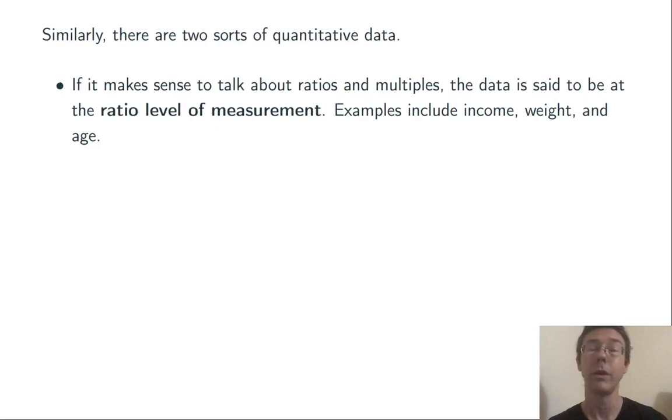Similarly, there are two kinds of quantitative data. If it makes sense to talk about ratios and multiples, the data is said to be at the ratio level of measurement. Examples include income, weight, and age. It makes sense to say that one person is twice as old as another, or that someone makes half as much money as another.